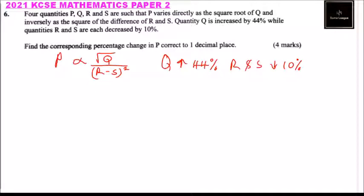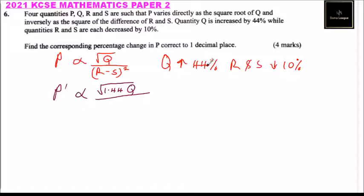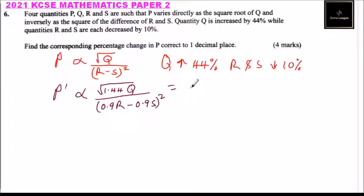We call our new P, P prime. P prime will be proportional to the new Q. Since Q has increased by 44%, the new Q is 1.44 of the old Q. R and S are each decreased by 10%, so the new R and new S will each be 0.9 of the original. Taking the square root of 1.44 gives 1.2, so we have 1.2 times the square root of Q in the numerator.